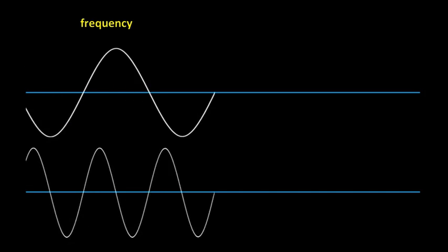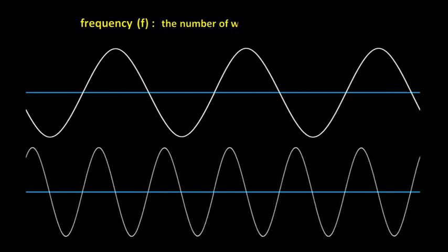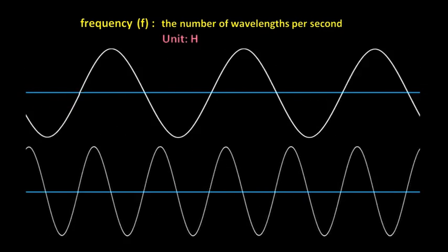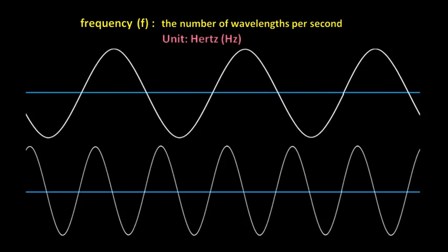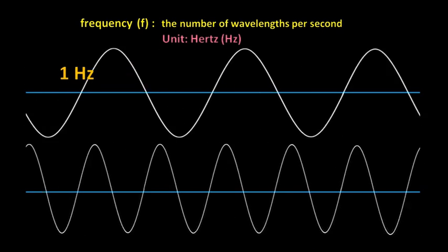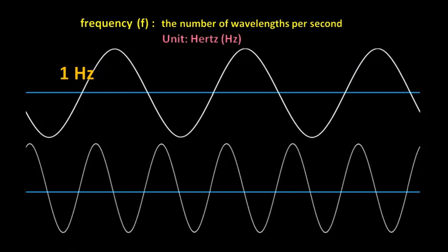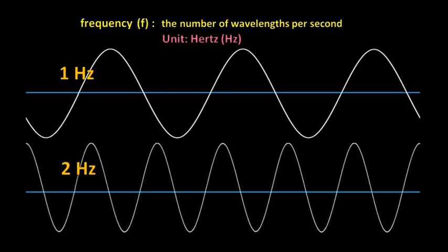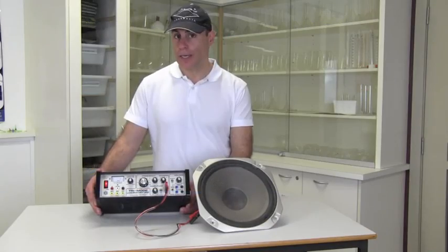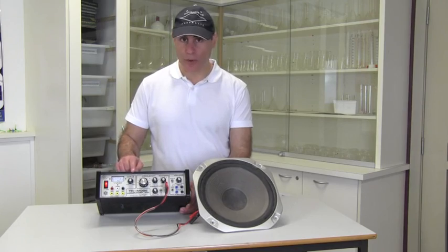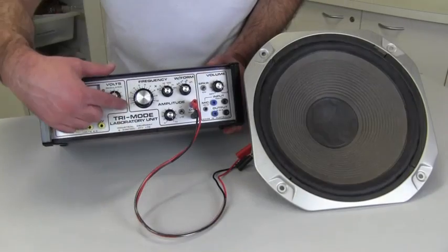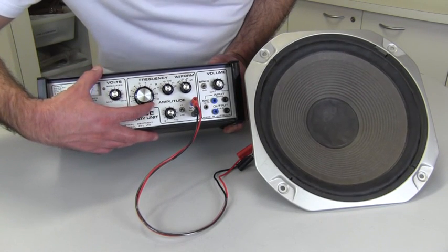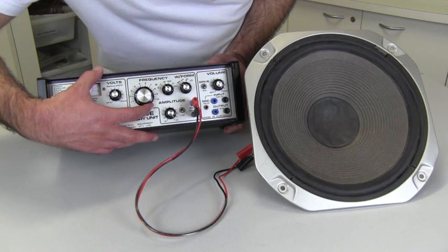Frequency, given the symbol F, is the number of complete wavelengths that pass a given point per second. It's measured in hertz. The frequency of the top wave is one hertz — one complete wavelength is being produced per second — while the frequency of the bottom wave is two hertz. Here, I've attached this signal generator to this speaker. I've set the output to one hertz, so the speaker is vibrating once per second. I can increase the frequency to two hertz, that is two vibrations per second.